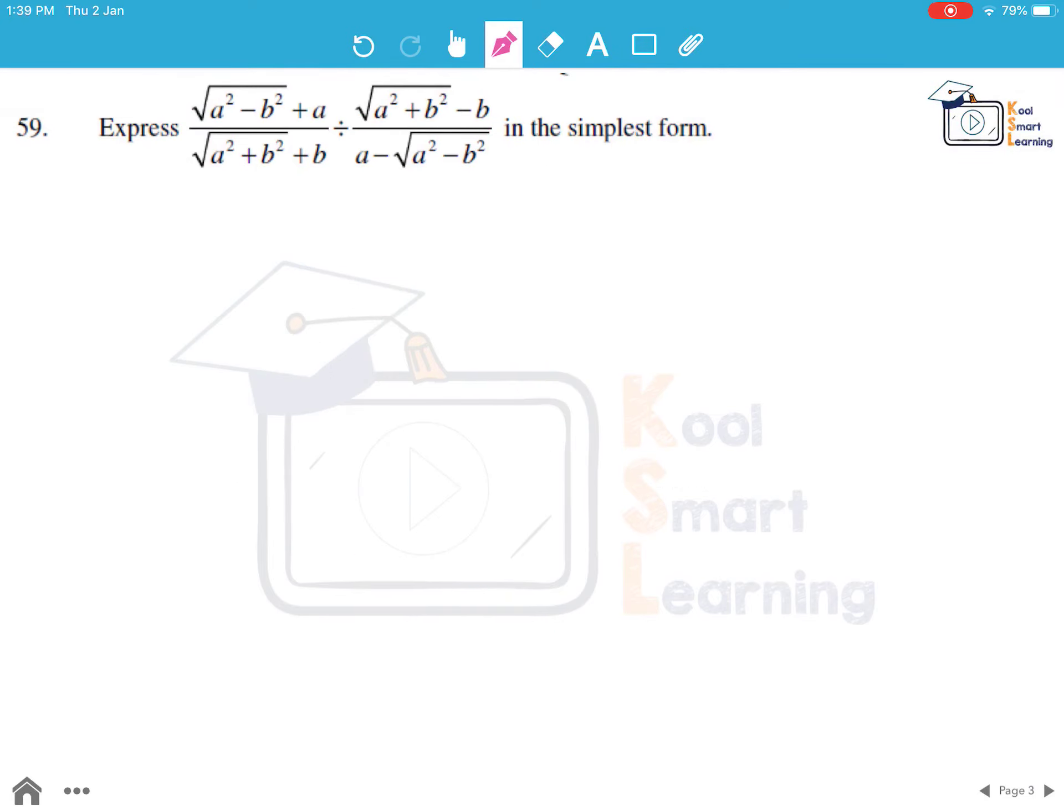Moving to the next question, express this given expression in the simplest form. So let's first of all write this numerator as such, but it is divided by this expression. We write the first expression as such and then divide by something. Now instead of divide by, we can say it is multiplied by the reciprocal of it.